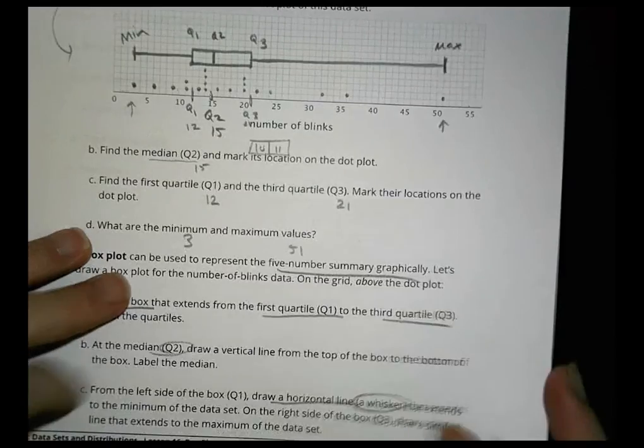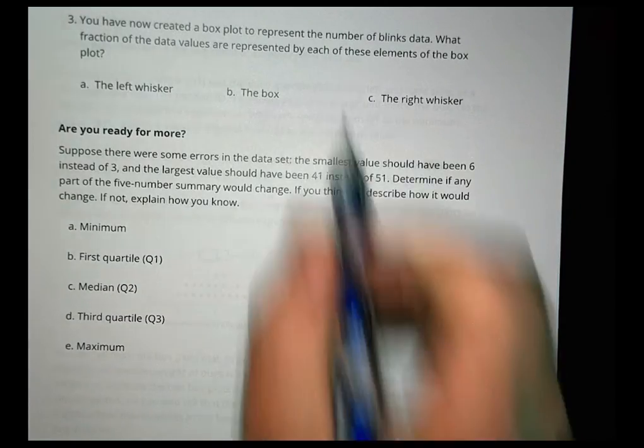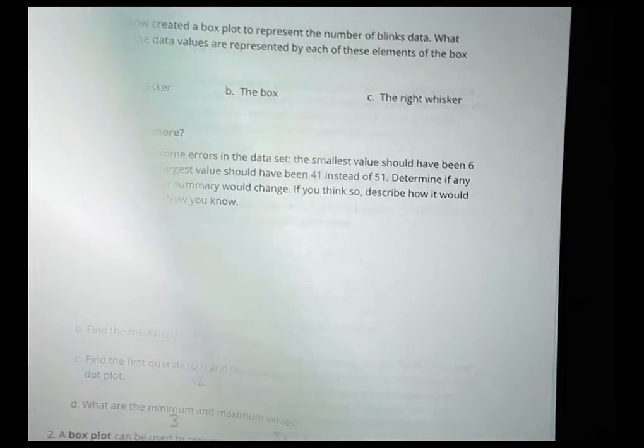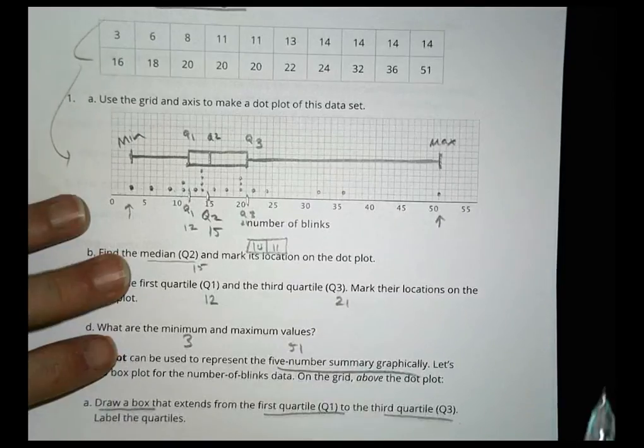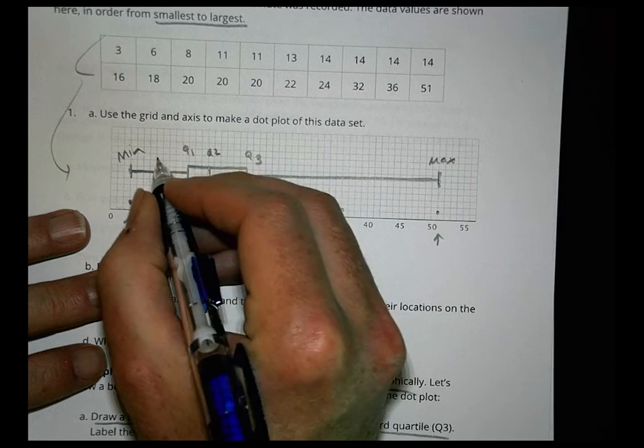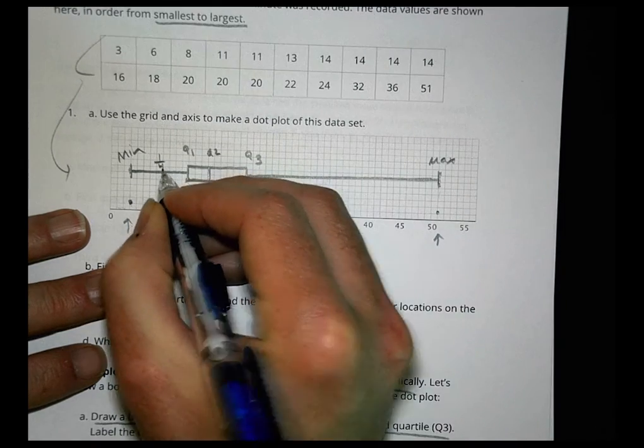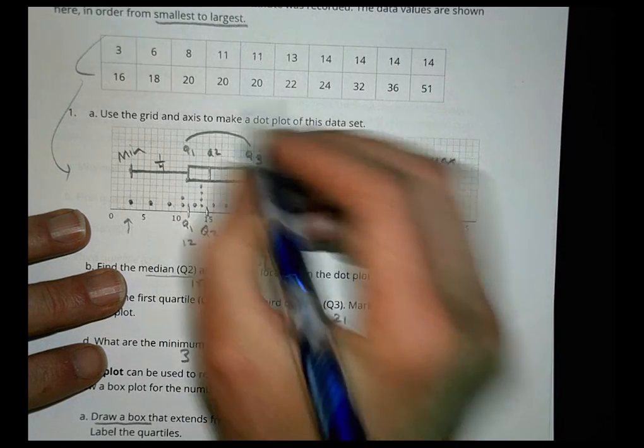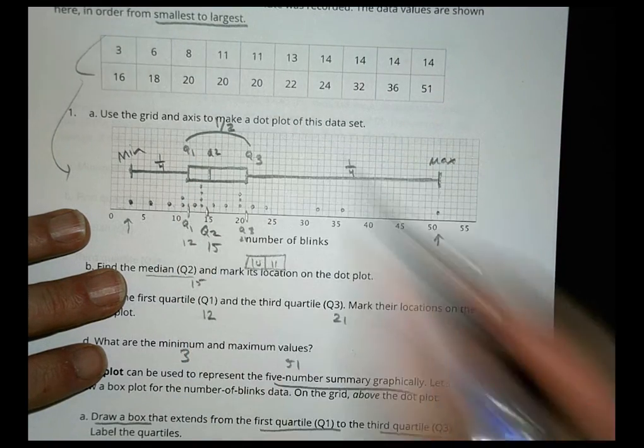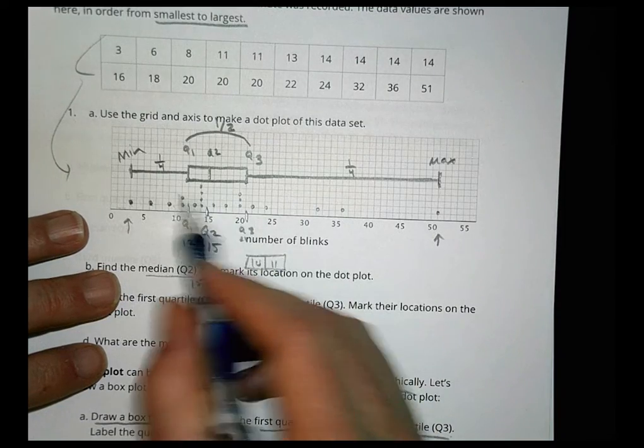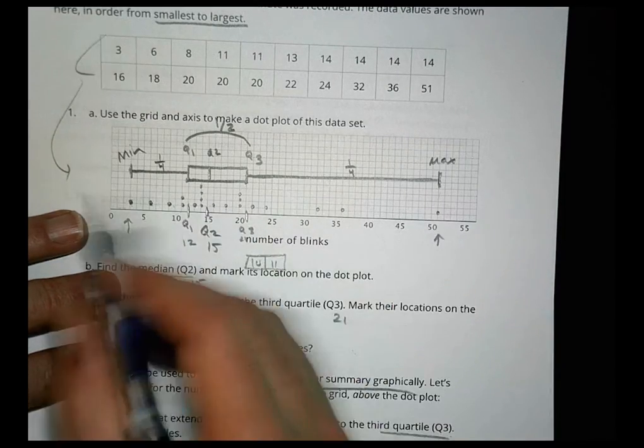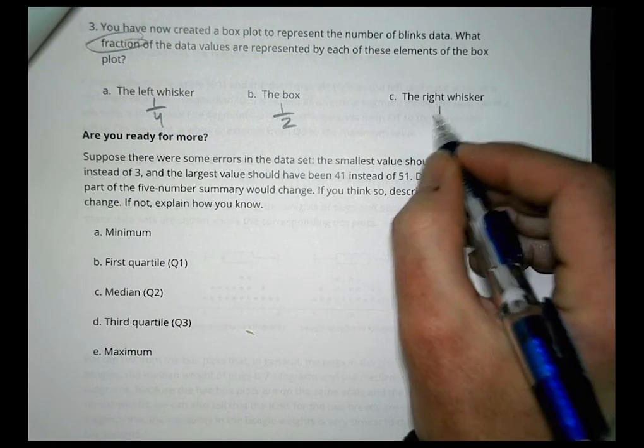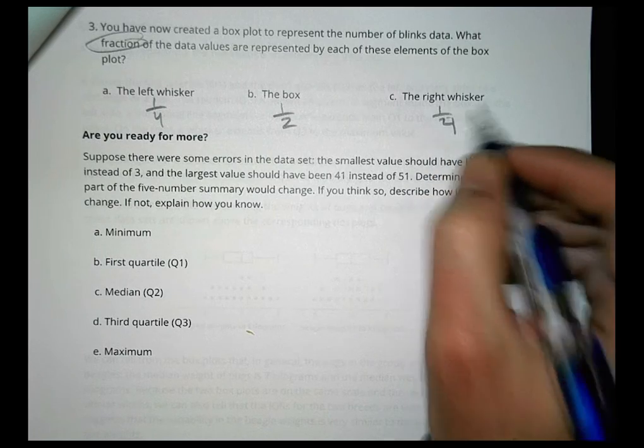So the next question asks, what fraction of the data are represented by each of these elements? So the left whisker. Well, the way the box plot works, remember, or the quartiles work, is this is one-fourth of all the data is here. This is one-fourth of all the data. And in this range, quartile one to three is one-half of all the data. And you can see that being the case. There are ten data points in here, five and five. So the left whisker is one-fourth, the box is a half, and the right is also one-fourth.